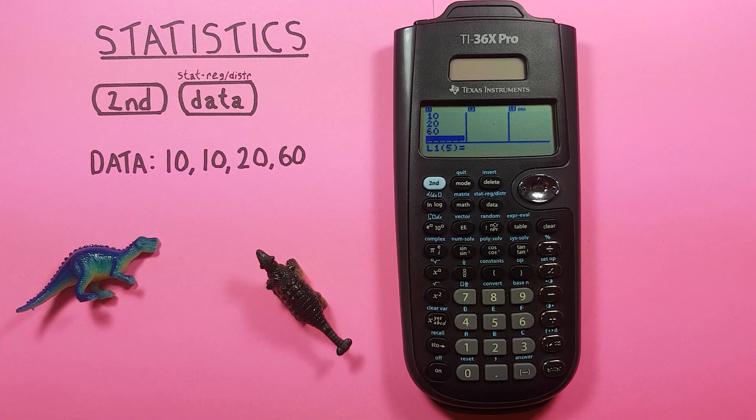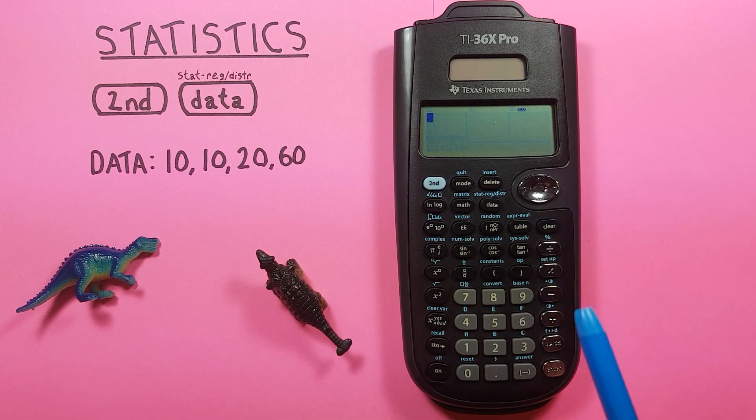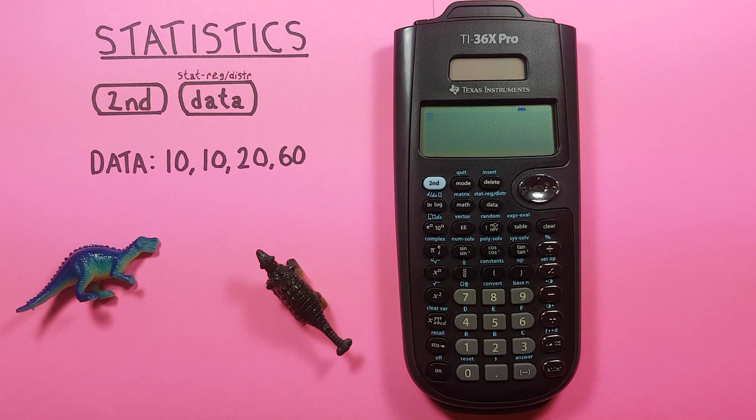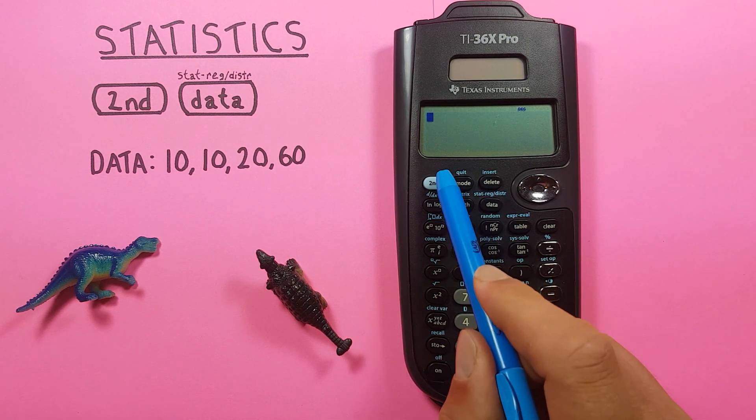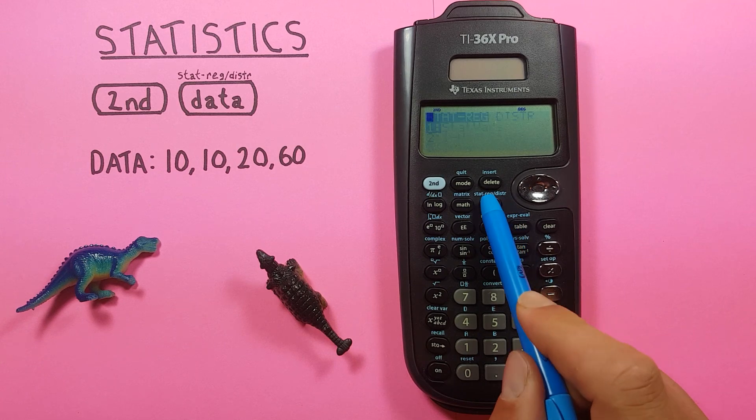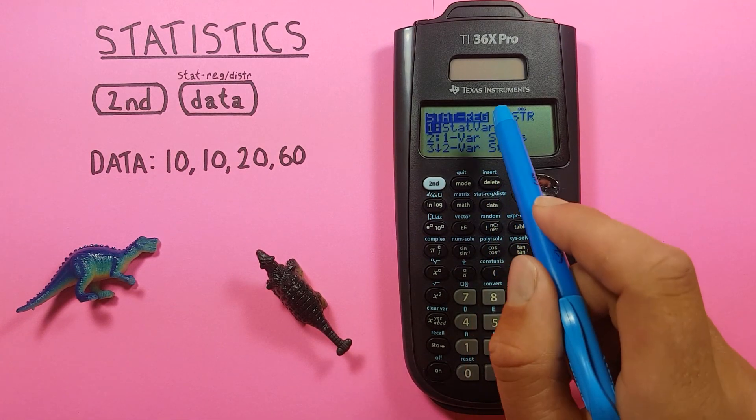As soon as it's entered we can press clear to get back to the main screen. Now to find our statistics we press second function again and the data key which brings up this menu here.